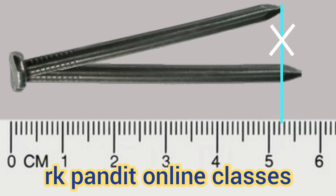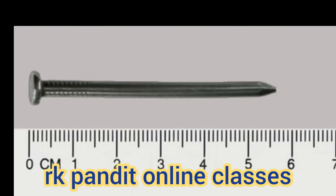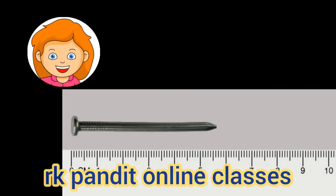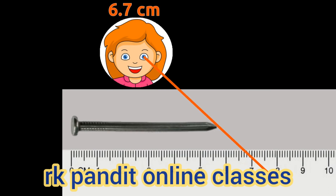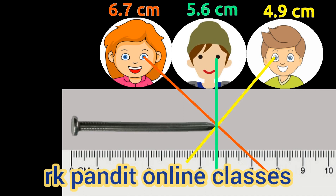During measurement, we should not move the nail or scale, otherwise readings will be inaccurate. A common error encountered during measurement is known as parallax, which is caused when the reading is done at an angle. Student A on the left will find the length to be more than the actual length, whereas student B on the right will note down less length. To solve this problem, your eyes should be exactly vertically above the measurement point. Student C will always have the correct measurement.